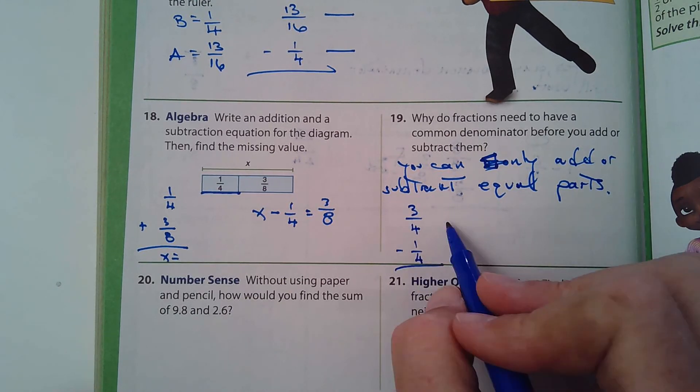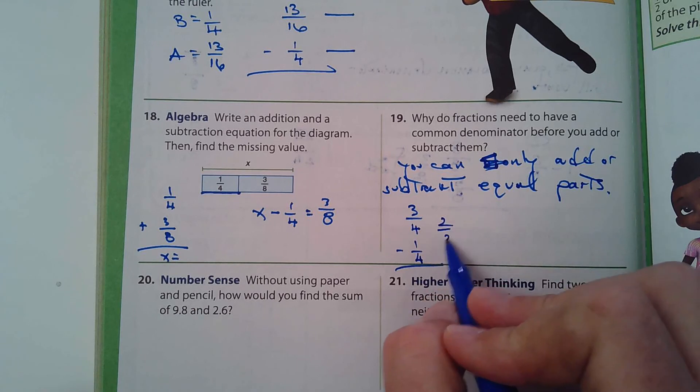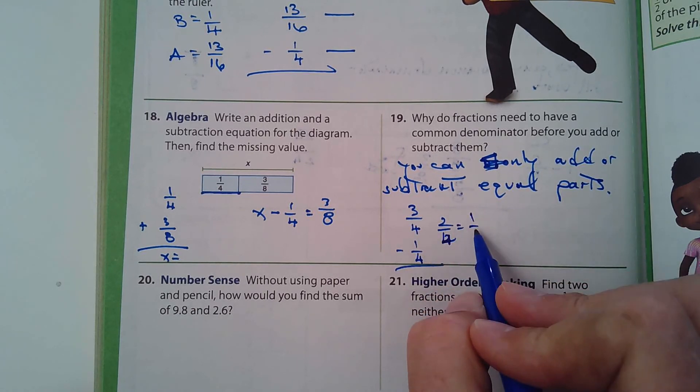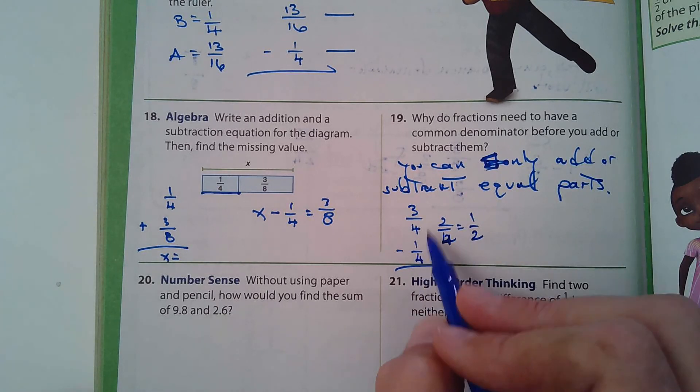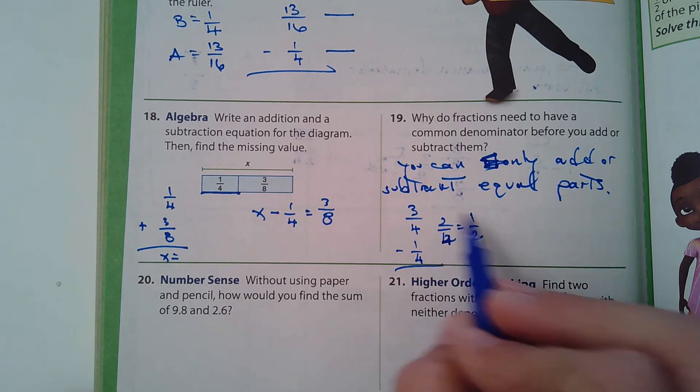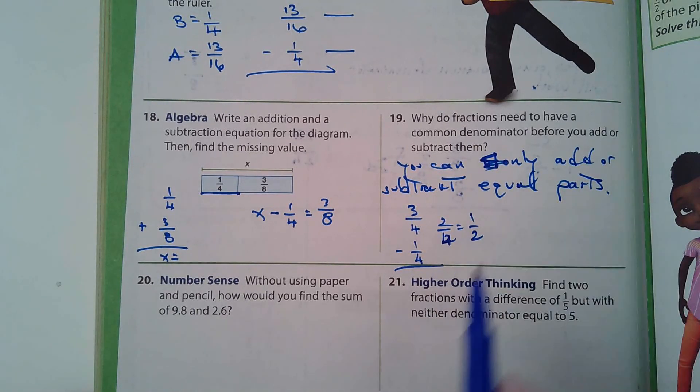three quarters subtracting one quarter. You guys know, that was the very first problem I did, is two quarters, which is equal to one half. But if we were in parts of fifths or sixths or eighths or sixteenths, it wouldn't work. We'd have to get the same denominator.